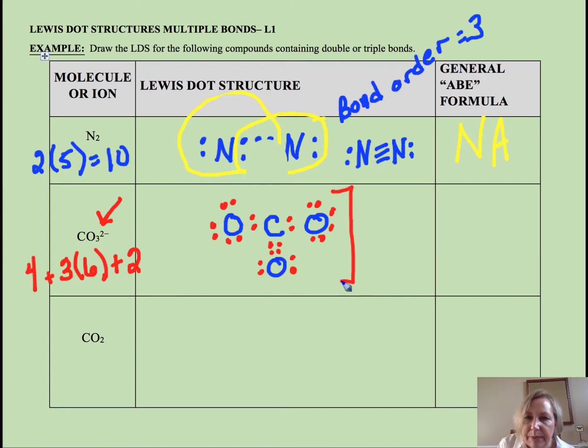The other thing is because it's an ion, we have to have brackets and charges. I think of IBC root beer. One of my favorites. I love IBC root beer. Ions, brackets, charges. Right?